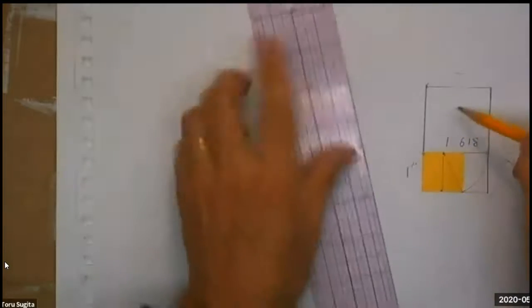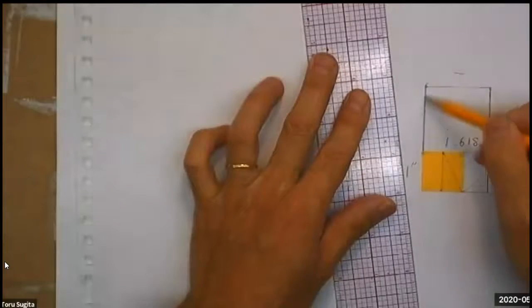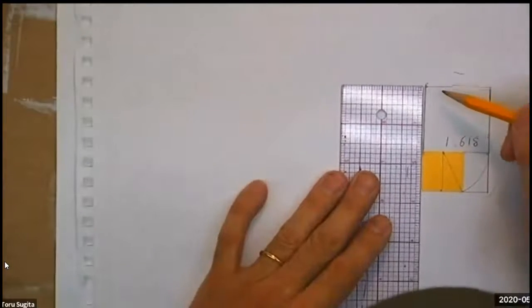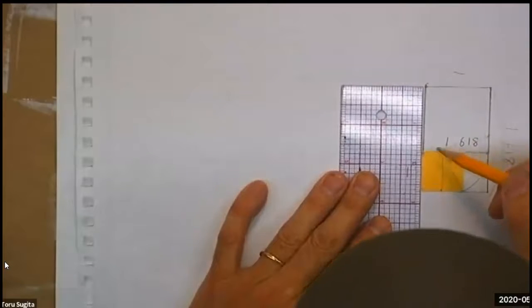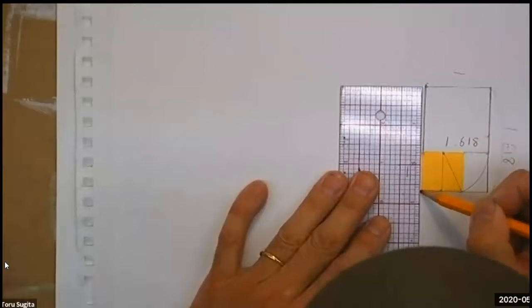And now you notice that this is now 2.618, right. And if you make another square here.